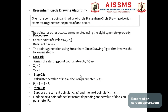The second step is to calculate the initial decision parameter p0. The formula is: p0 = 3 − 2r. This gives us the initial decision parameter p0.